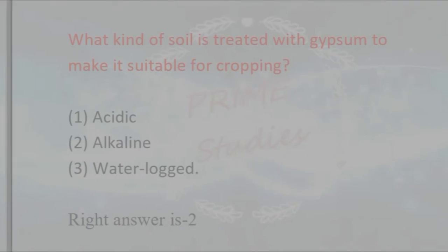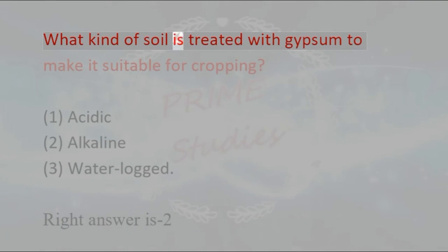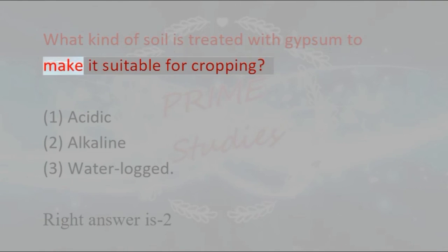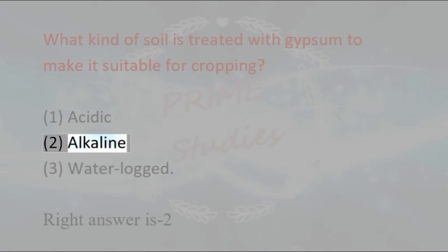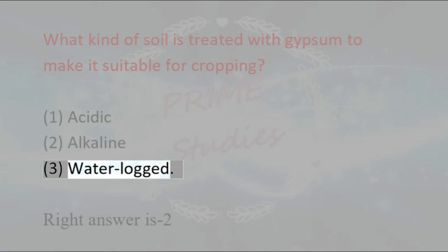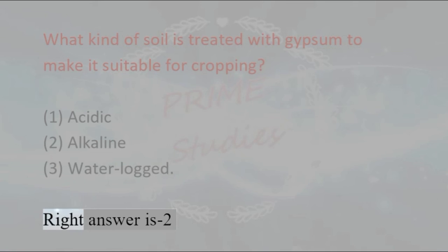What kind of soil is treated with gypsum to make it suitable for cropping? 1. Acidic, 2. Alkaline, 3. Waterlogged. Right answer is 2 — Alkaline soil.